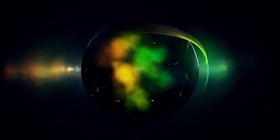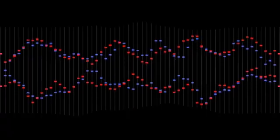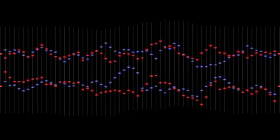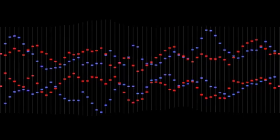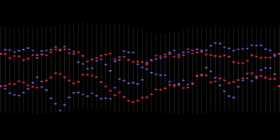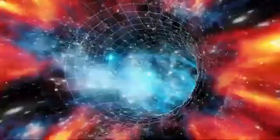But then, something extraordinary happened. Researchers realized axions weren't just a mathematical fix. If they existed, they could be the missing piece of the dark matter puzzle. Suddenly, this tiny invisible particle became the holy grail of cosmology.